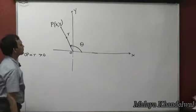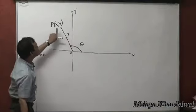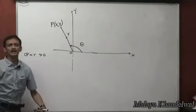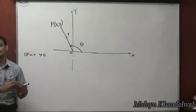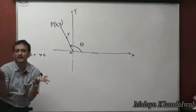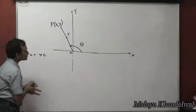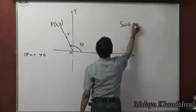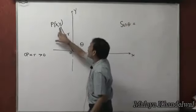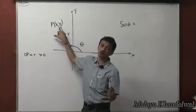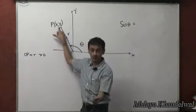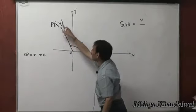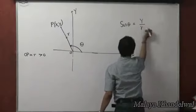Suppose the rotating line has rotated an angle theta. In the process, the tip of the rotating line assumes coordinates x, y. We then redefine our trigonometric ratios away from the right-angled description. We define sin theta as the y coordinate of the tip — which could be positive or negative — divided by the length r of the rotating line.